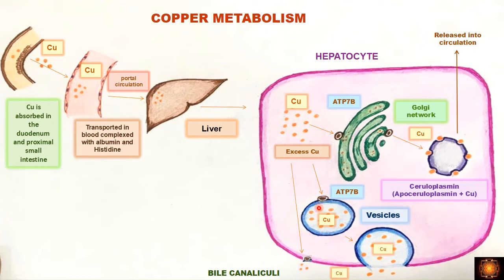In normal copper metabolism, copper is absorbed in the duodenum and proximal small intestine. After absorption it enters the circulation, where copper forms a complex with albumin and histidine. Most of the copper forms a complex with albumin, which is transferred through the portal circulation to the liver. In the hepatocyte, the copper-albumin complex enters, copper is separated from albumin, and then transported to the Golgi apparatus.